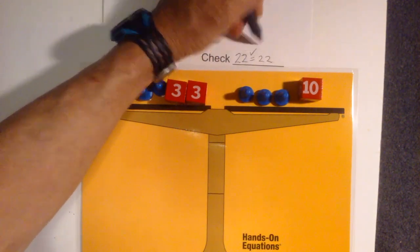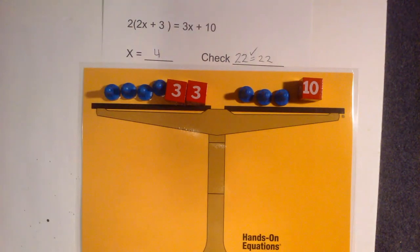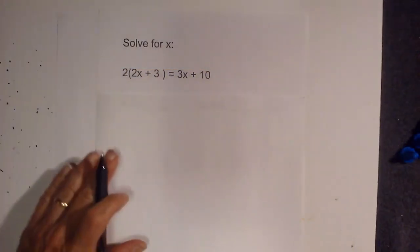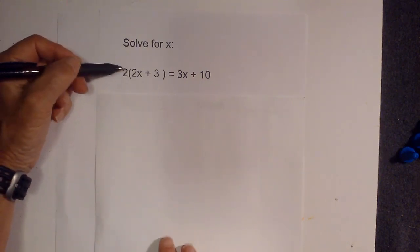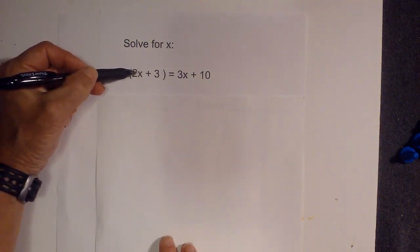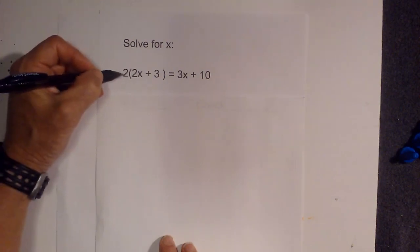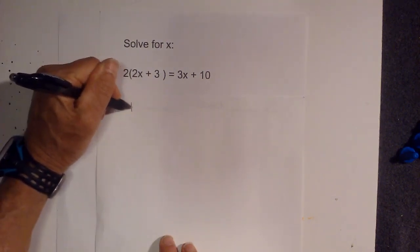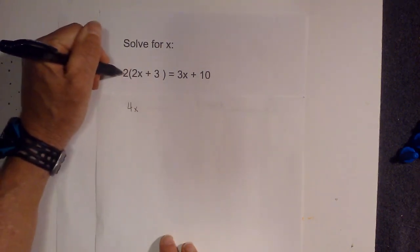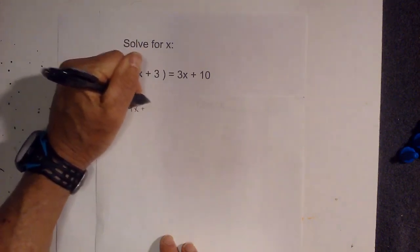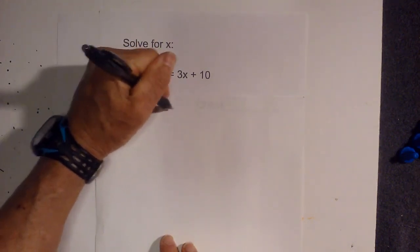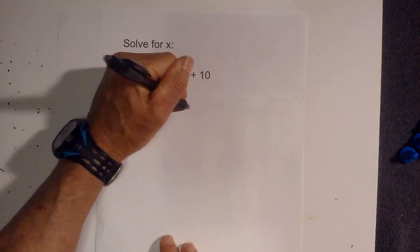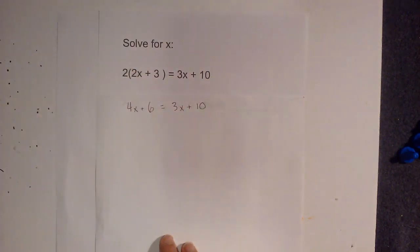It works. Now let's solve this the traditional way. Let's solve this the traditional way. The number on the outside means you multiply by what's on the inside. 2 times 2x is 4x, 2 times 3 is 6, equals 3x plus 10. And if you remember, that's exactly what we had when we had our physical setup.